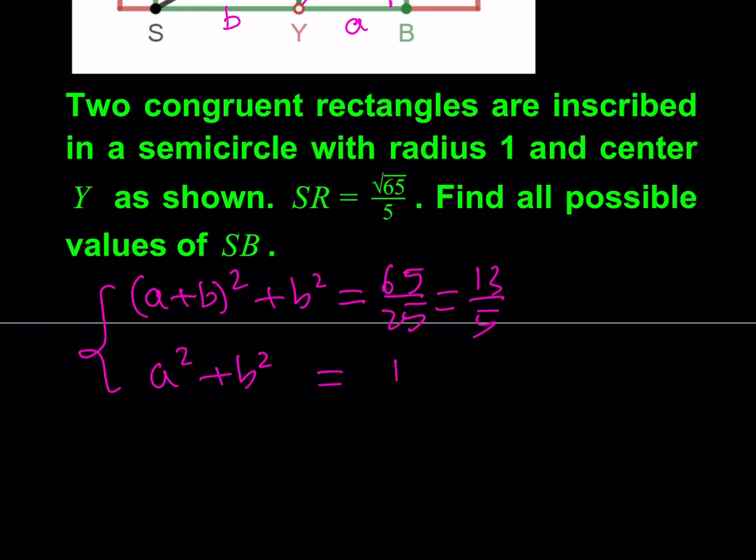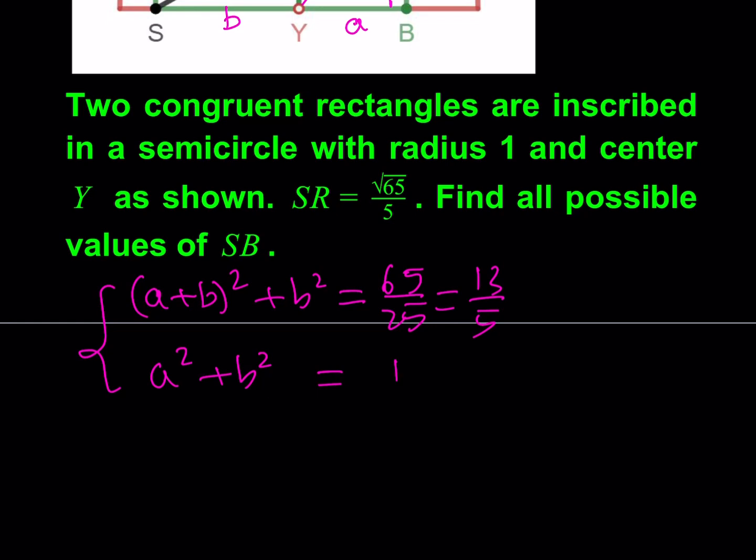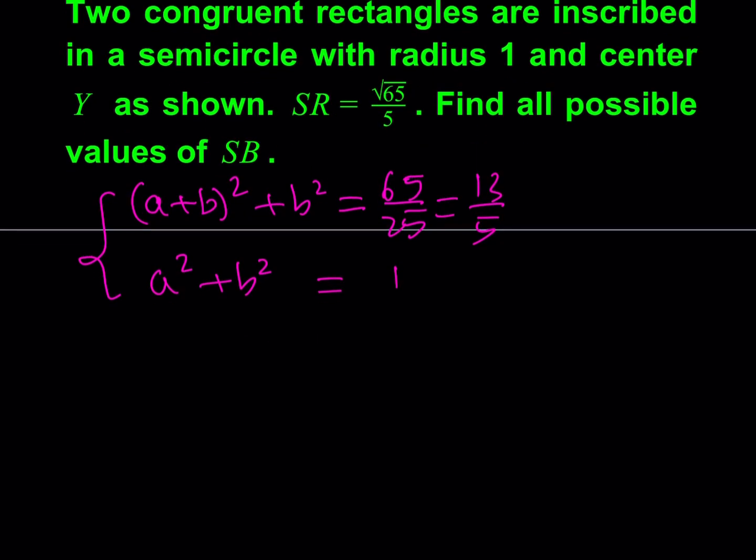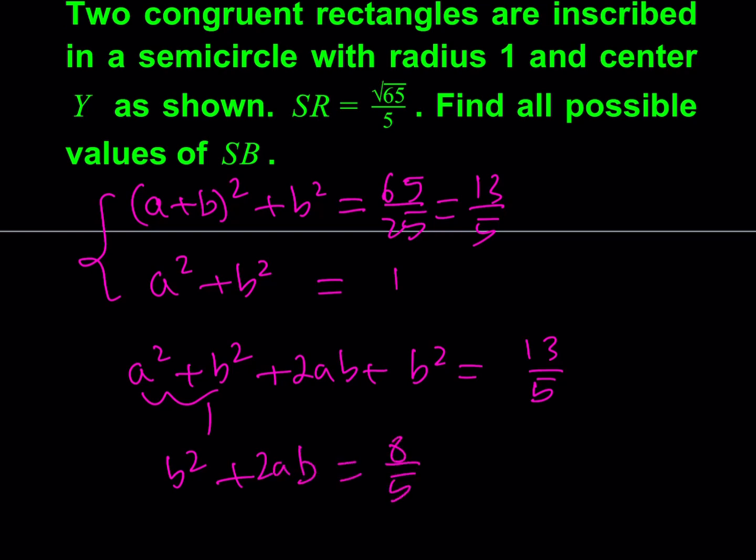So if I put these two equations together, let me expand the first one. I should be getting a² + b² + 2ab + b² = 13/5. Now I know that this is equal to 1. I'm going to go ahead and subtract that from the 13/5 which is going to give me 8/5. So I get another equation like this.